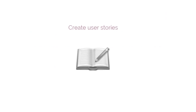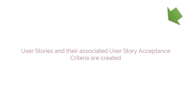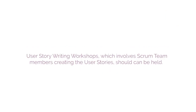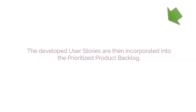The first process is Create User Stories. In this process, user stories and their associated user story acceptance criteria are created. User stories are usually written by the product owner and are designed to ensure that the customer's requirements are clearly depicted and can be fully understood by all stakeholders. User story writing workshops involving Scrum Team members can be held. The developed user stories are then incorporated into the prioritized product backlog.